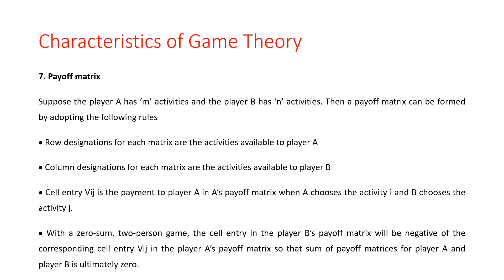A payoff matrix can be formed by adopting the following rules: the row designations for each matrix are the activities available to player A, and the column designations are the activities available to player B. If the cell entry Vij is the payment to player A when A chooses activity i and B chooses activity j, then in the two-person zero-sum game, the cell entry in player B's payoff matrix will be the negative of the corresponding entry Vij in player A's payoff matrix, so that the sum of payoff matrices for player A and player B is ultimately zero.